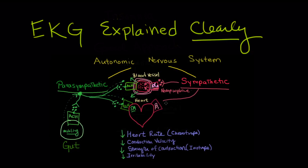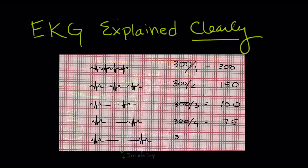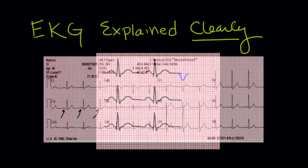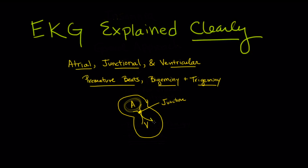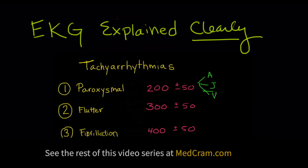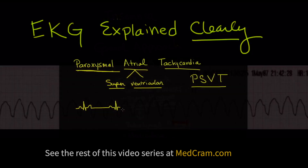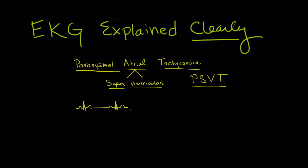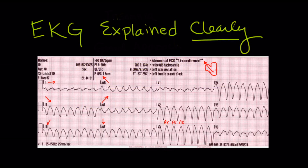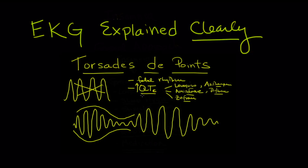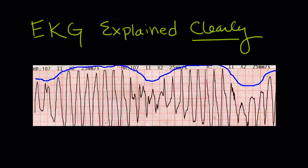We'll cover the impact of our nervous system and neurotransmitters on the heart, then on to rate, rhythm, axis, escape rhythms, PVCs, bigeminy, tachyarrhythmias, ventricular tachycardia, and the key differences between ventricular tachycardia and paroxysmal supraventricular tachycardia with aberrancy, the QTc, and the potentially life-threatening torsades de pointes.